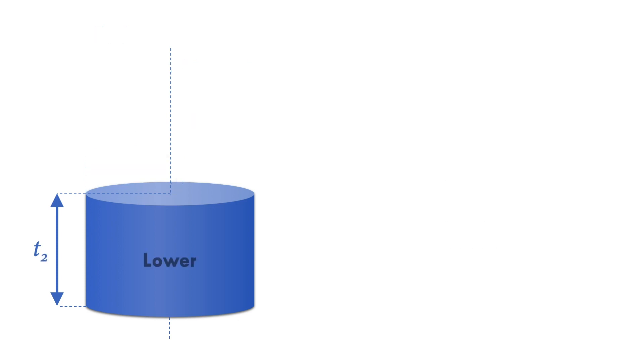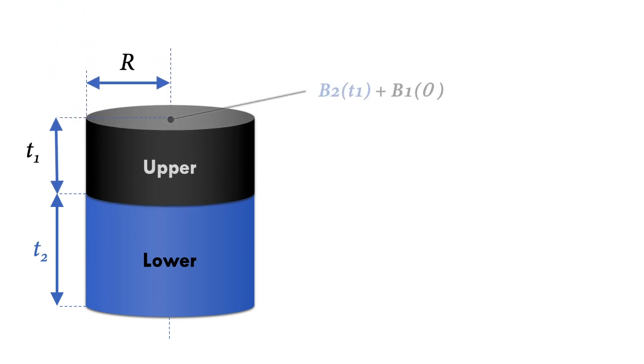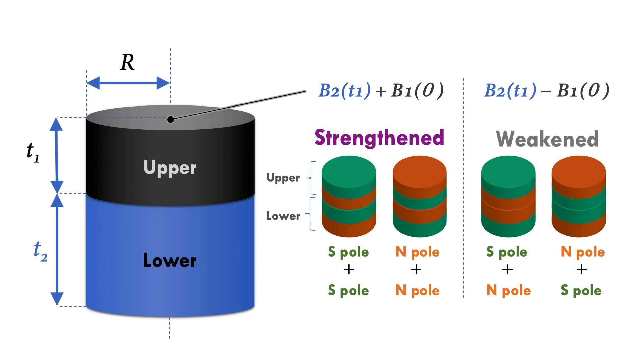Then, when two magnets are stacked, the magnetic flux density in the top center is the sum of the magnetic flux densities of the two magnets. At this time, if the direction of magnetic polarities are the same, strong S or N magnetic fields will be displayed, and if they are reversed, the two magnetic fields will be cancelled and weakened.